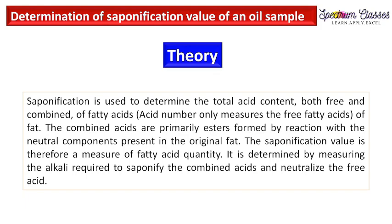First we will start with the theory — why we are doing this experiment and its significance. Saponification is used to determine the total acid content, both free and combined, of the fatty acids. A fat sample has both free fatty acids as well as combined fatty acids. Saponification is the method by which we determine the free as well as combined fatty acids present in the oil or fat sample. Acid number is used to measure only the free fatty acids — that is the difference between saponification and acid number determination.